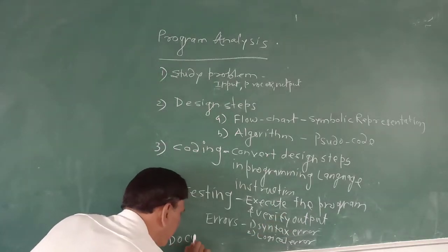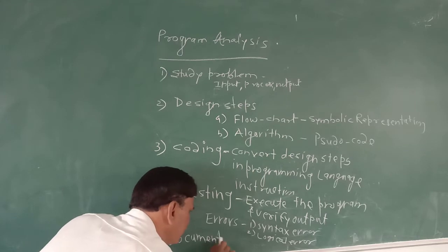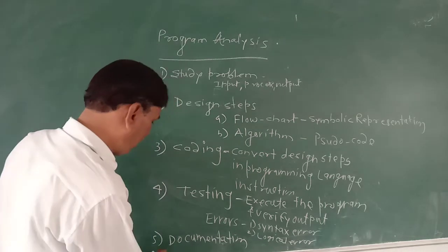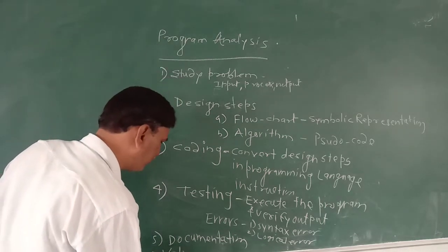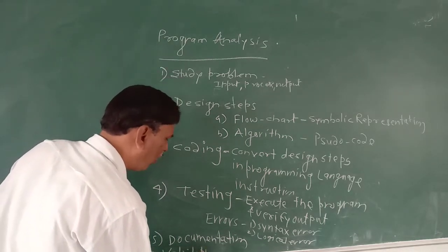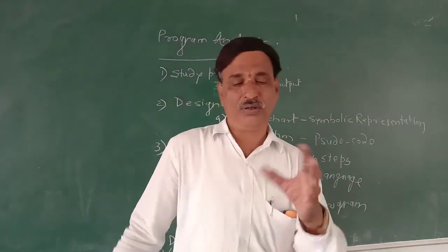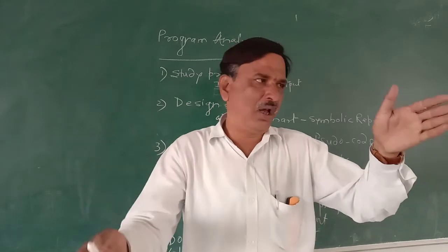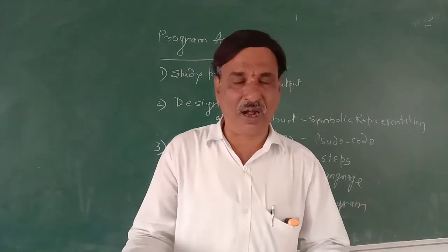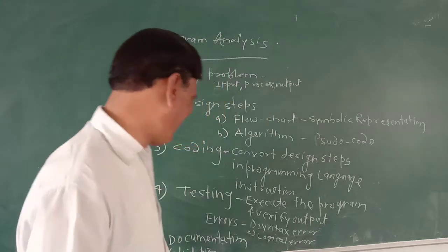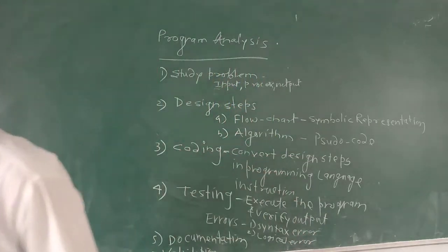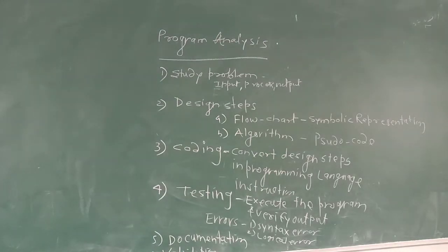And last: documentation. What is documentation? Validation of program. Validation means checking whether the input is given in a particular range - for example, radius should be between 1 and 100, or whether it can be in fractional form. So we have to validate that. Similarly, the author of the program - who has written the program - that is also part of documentation.